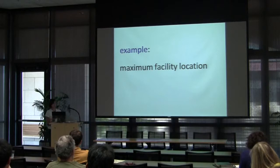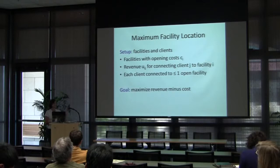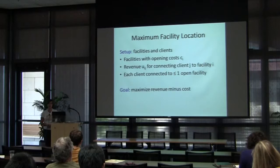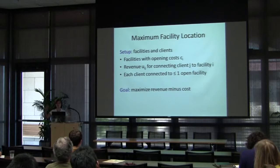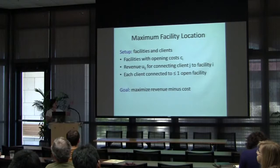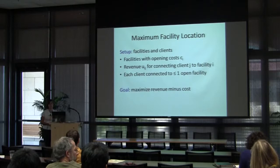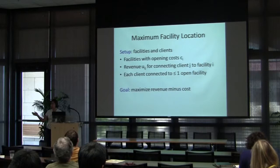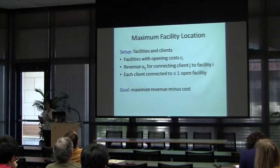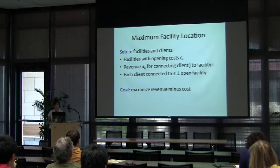Maximum facility location is a natural variant of facility location problems. You have facilities and clients; every facility has an opening cost CI, and we get a revenue UIJ for connecting client J to facility I. You can think of the revenue as a profit minus connection cost, but most generally, connecting client J to facility I has some revenue UIJ that may differ across facilities. We find a solution where each client connects to at most one open facility, maximizing revenue minus facility opening costs.